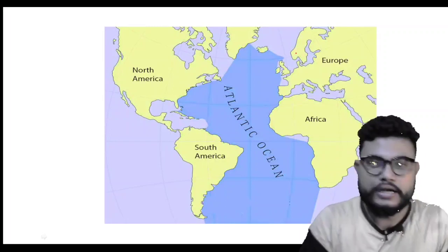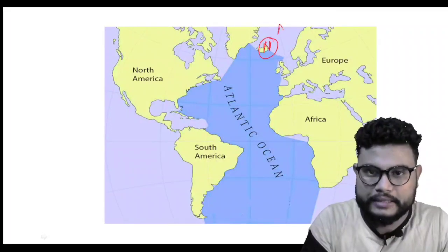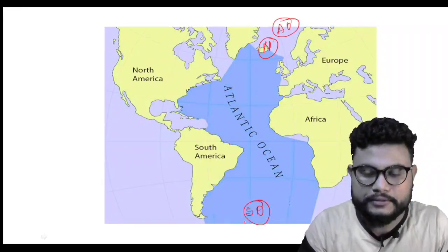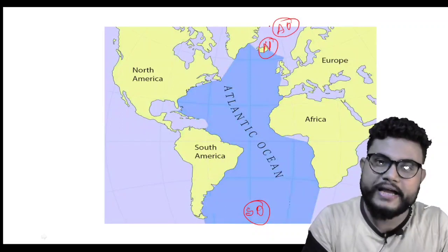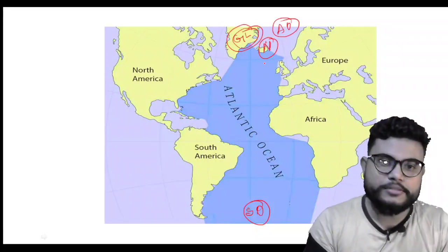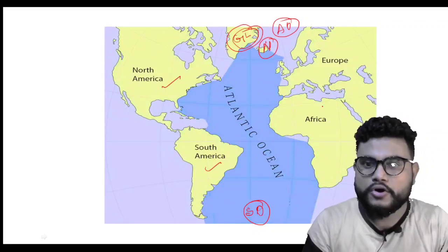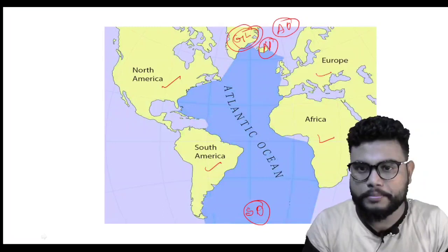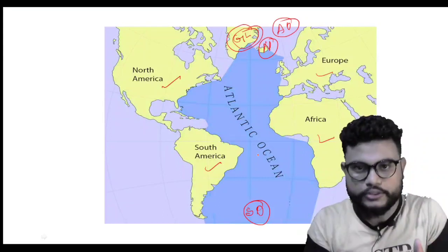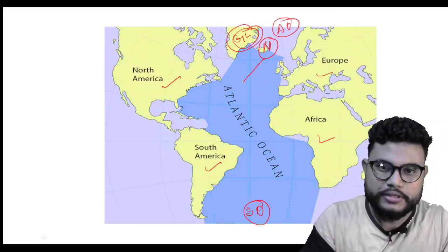Now we are moving into the next ocean, which is the Atlantic Ocean. In the north, Atlantic Ocean connects with the Arctic Ocean; in the south, it connects with the Southern Ocean. North boundary is the Arctic Ocean and the Greenland region. To the west are North America and South America; to the east are Africa and Europe. It is the second largest ocean in the world and its shape is S-shaped.